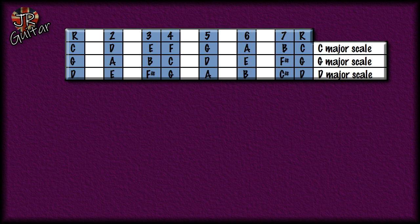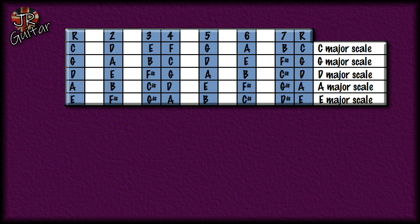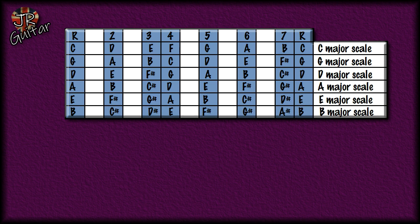We now take the fifth note of the D major scale, which is A, and build a major scale starting on that note. Then the fifth note of the A major scale is E, so let's look at the E major scale. Then the fifth note of the E major scale is B, so we apply our two-two-one-two-two-two-one step pattern to get the B major scale. Next we take the fifth note of the B major scale, which is F sharp, and get the F sharp major scale.